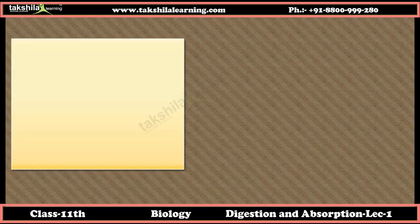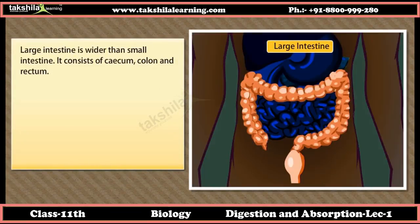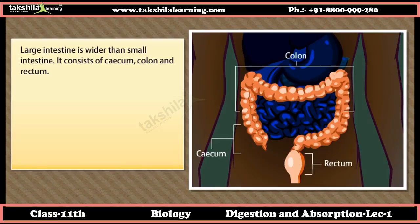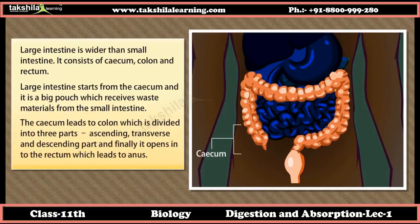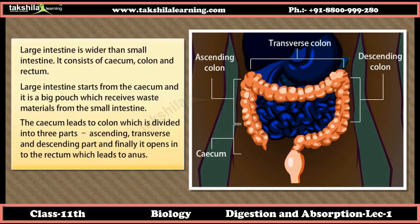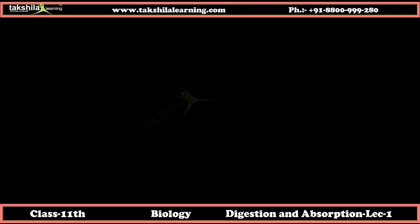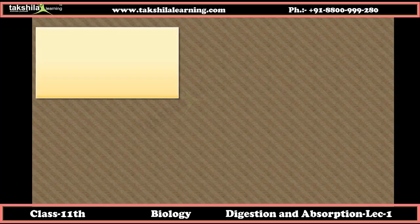The large intestine is wider than the small intestine and consists of the caecum, colon, and rectum. It starts from the caecum, a large pouch that receives waste materials from the small intestine. The caecum leads to the colon, which is divided into ascending, transverse, and descending parts, and finally opens into the rectum, which leads to the anus.